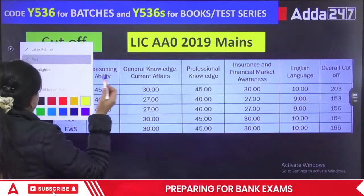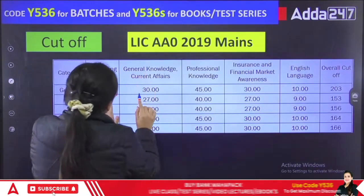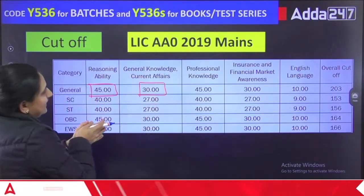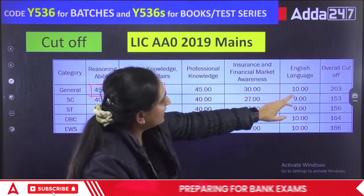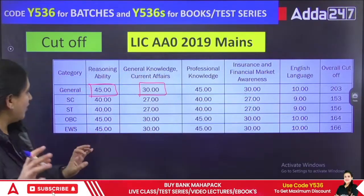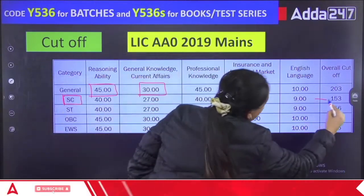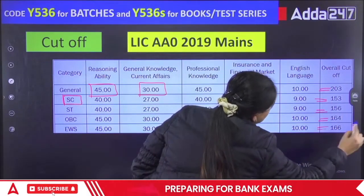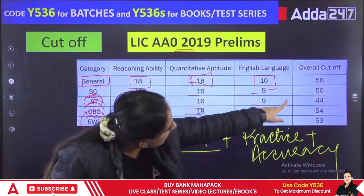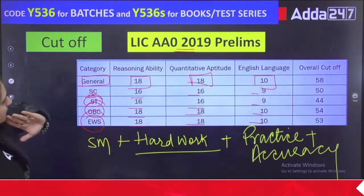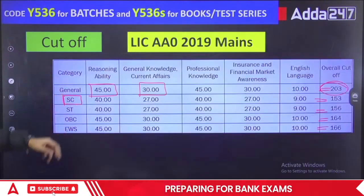If we talk about the mains cutoff, I have seen 45 here for general and professional knowledge, 45; insurance, 30; and 10 — total overall cutoff of 203. For ST overall: 153, 156, 162 — highest overall cutoff 203. For general overall cutoff: around 588. This is our main cutoff data. I think the things are clear — if you want, take a screenshot of this.